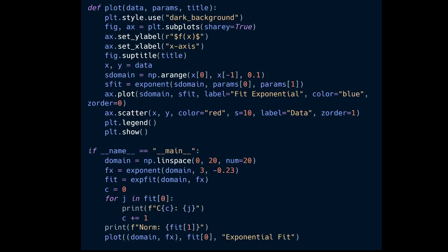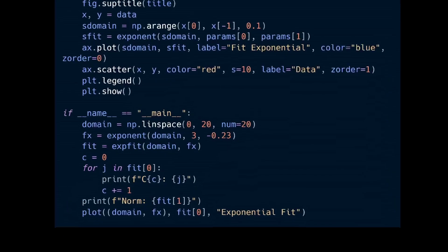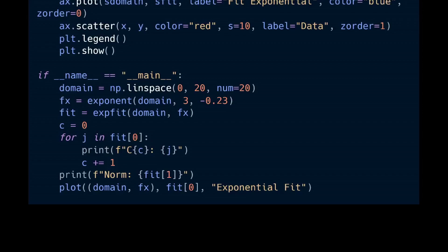You can see I have a plotting function here but that's not the point of this video so we're not going to cover it, but you can of course go ahead and check it out. Right here in main you can see that we are generating our domain which is going to be our x coordinates. We're plugging that into our exponent function to generate our y coordinates with a c coefficient of 3 and an alpha coefficient of -0.23. I'm not adding in any noise into this so we should get a perfect fit out.